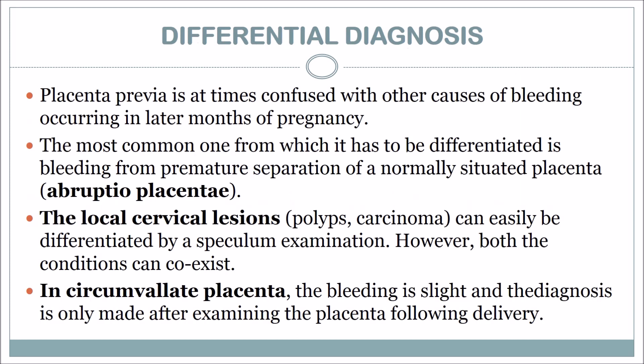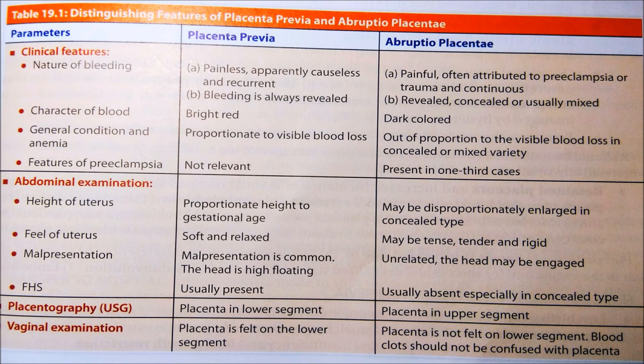For differential diagnosis, placenta previa is sometimes confused with other causes of bleeding occurring in the late months of pregnancy. The most common condition to differentiate is bleeding from premature separation of a normally situated placenta, that is abruptio placentae. Local cervical lesions such as polyp or carcinoma can be differentiated by speculum examination, though both conditions can co-exist. In circumvallate placenta the bleeding is slight and the diagnosis is only made after examining the placenta following delivery.